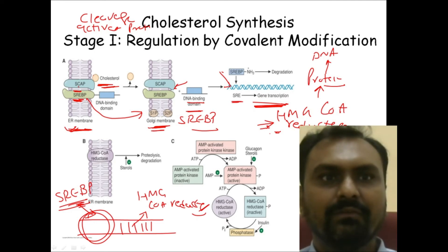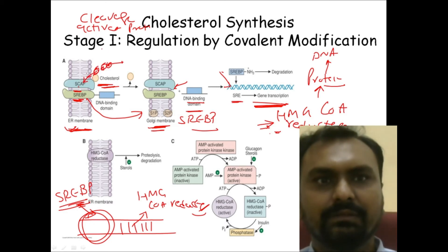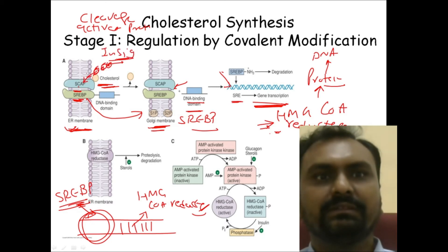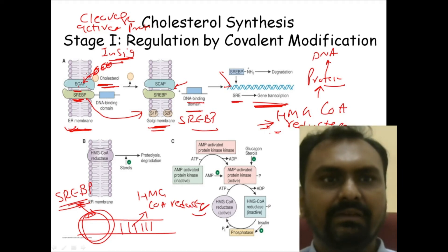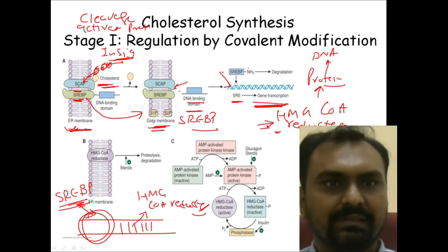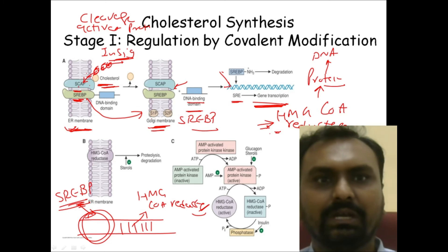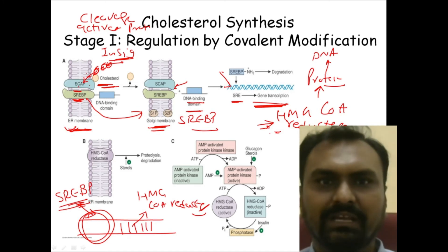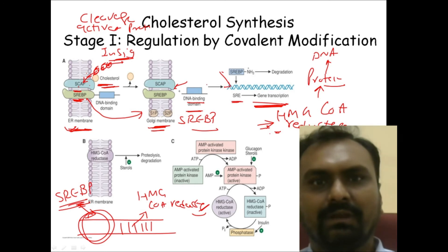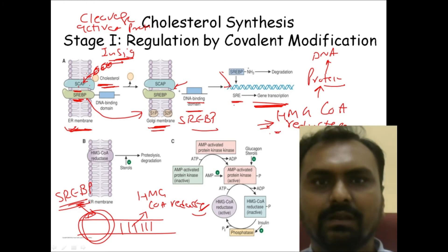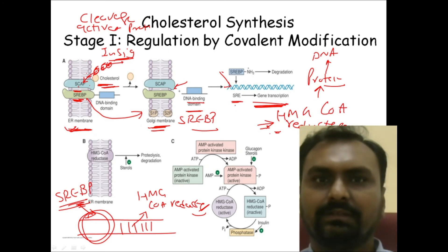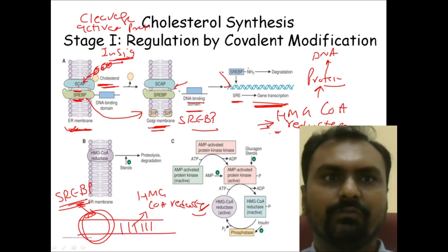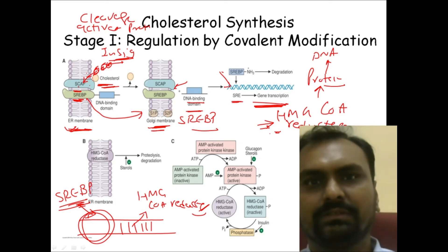When cholesterol level is sufficient, it will induce INSIG protein. This INSIG protein will bind with SCAP, and when INSIG binds with SCAP, then SCAP cannot bind with SREBP. So SREBP cannot be exported to the Golgi membrane, the DNA binding domain is not exposed, and it cannot act on the promoter region of the HMG-CoA reductase gene. Therefore HMG-CoA reductase enzyme is not synthesized and endogenous cholesterol synthesis is lowered.